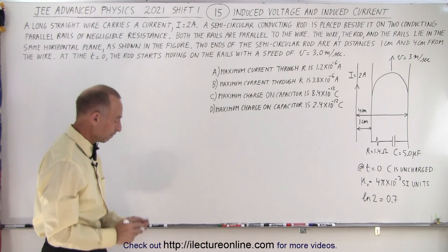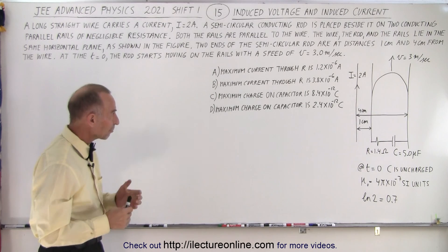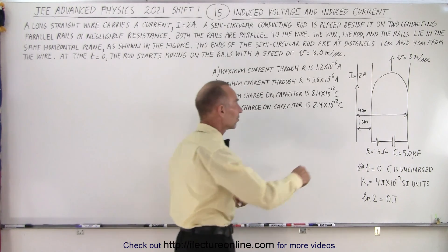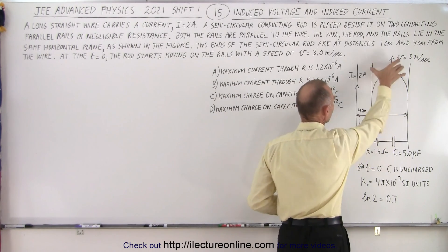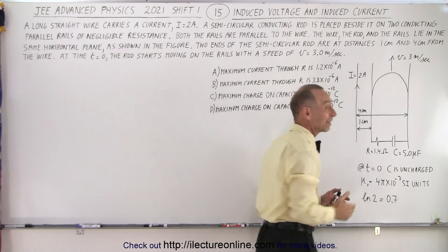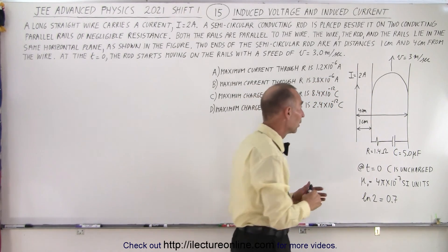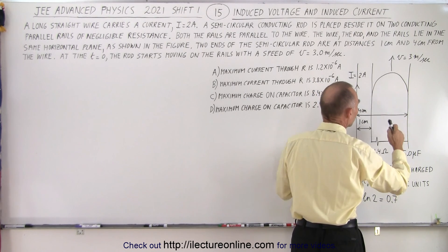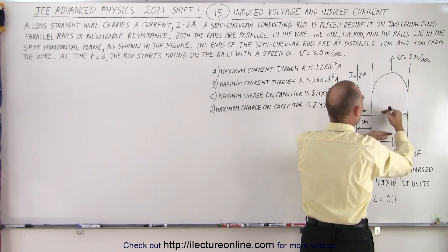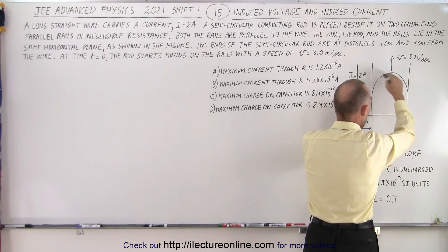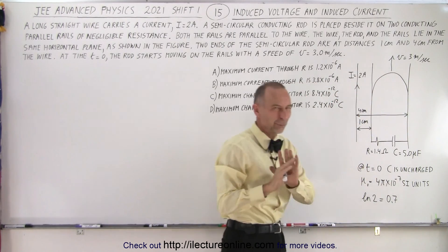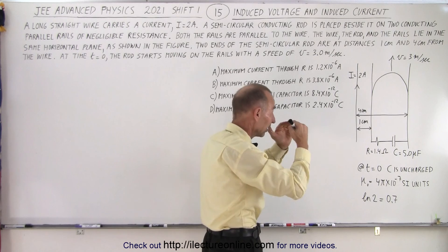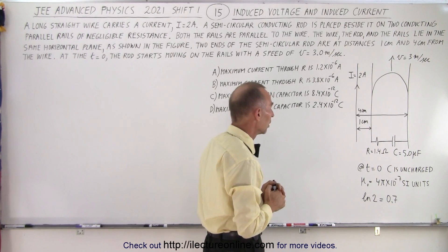How do we solve this problem? Well, we have this semicircular rod that moves on the two rails. Does it matter that the rod is semicircular? What if I just replace it by just a straight wire? It would make no difference at all because it's only the change in the area that matters. So it doesn't matter that this is semicircular. So we don't need to worry about the fact that the rod is shaped that way.